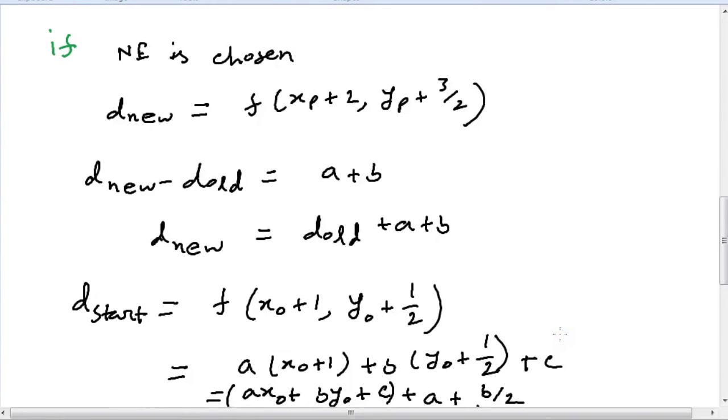Similarly, when we chose pixel NE, we have the difference to be a plus b, which will have to become 2 into a plus b, and this gives us 2 into dy minus dx.